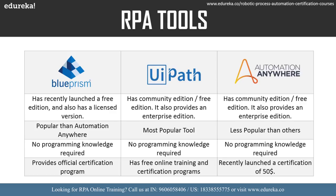Automation Anywhere has also recently launched a certification for $50. Overall, Blue Prism is used for large automation in enterprise businesses and provides various features such as data abstraction, analytics, data security, and many more.